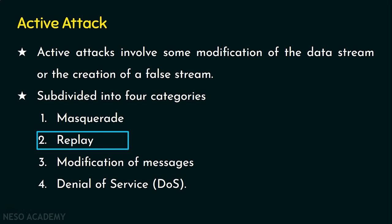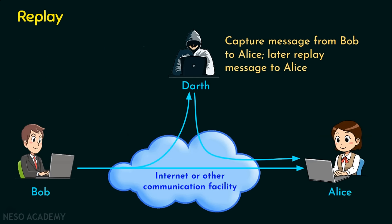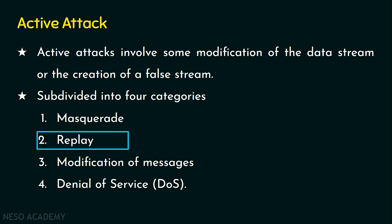The second active attack is the replay attack. In a replay attack, messages are subsequently retransmitted. Darth captures messages sent from Bob to Alice and later replays those same messages again and again, providing an unauthorized effect that confuses and provokes Alice.